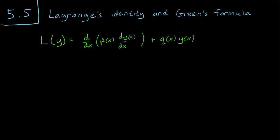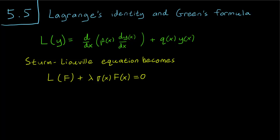The reason we introduced this notation is that it allows us to write our Sturm-Liouville equation in a slightly different form. So when we simplify the whole first part, we just get L(F) plus lambda sigma(x)F(x) equals 0 as our Sturm-Liouville equation, where lambda is the eigenvalue and F is the corresponding eigenfunction.